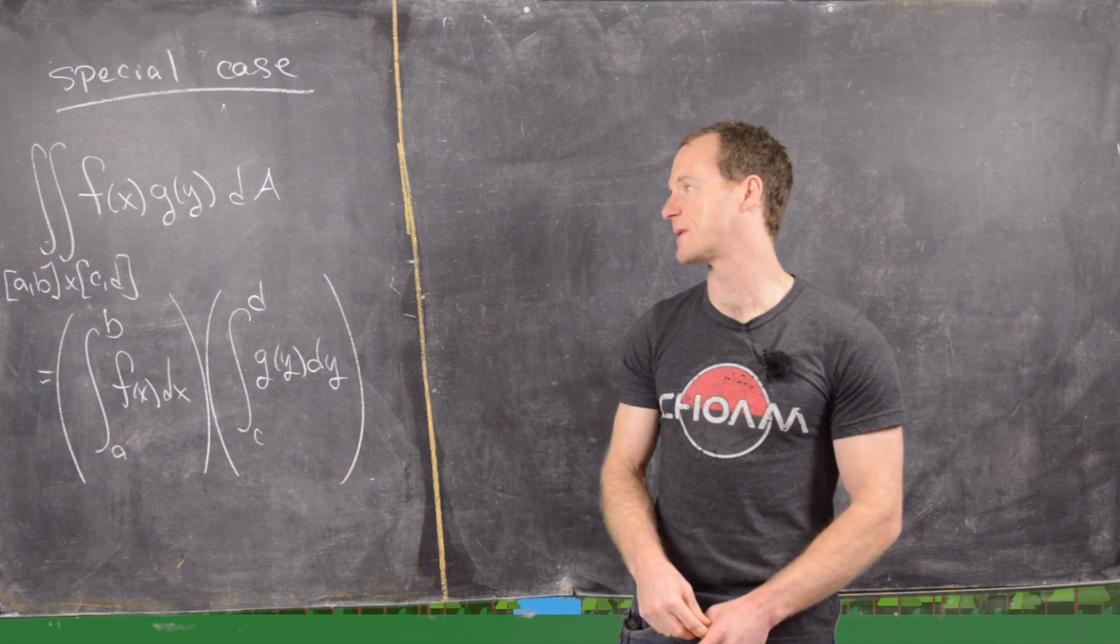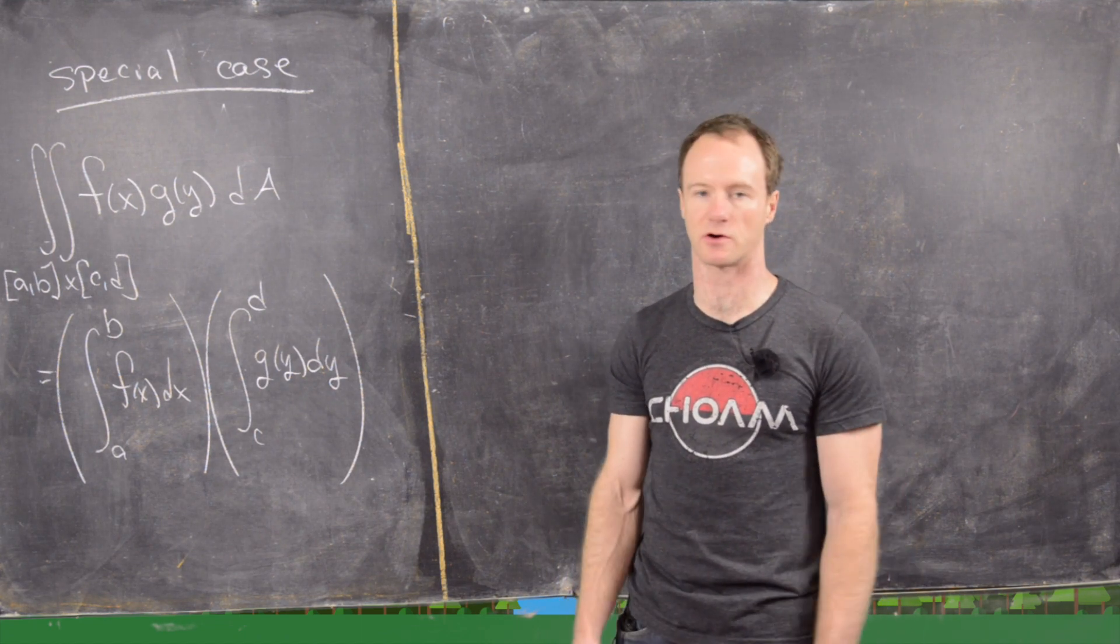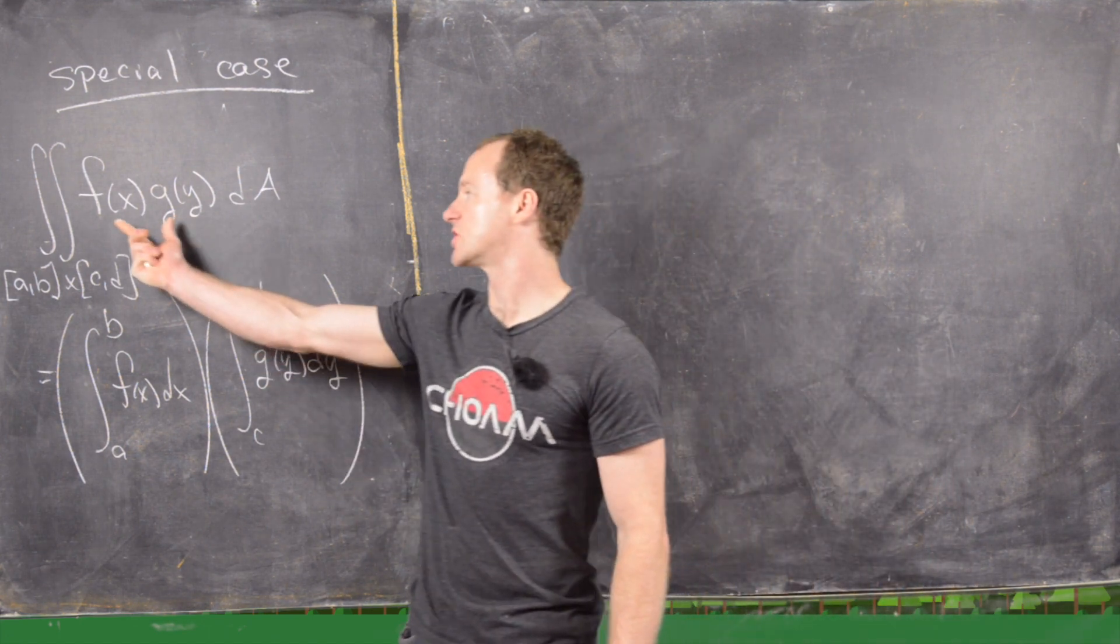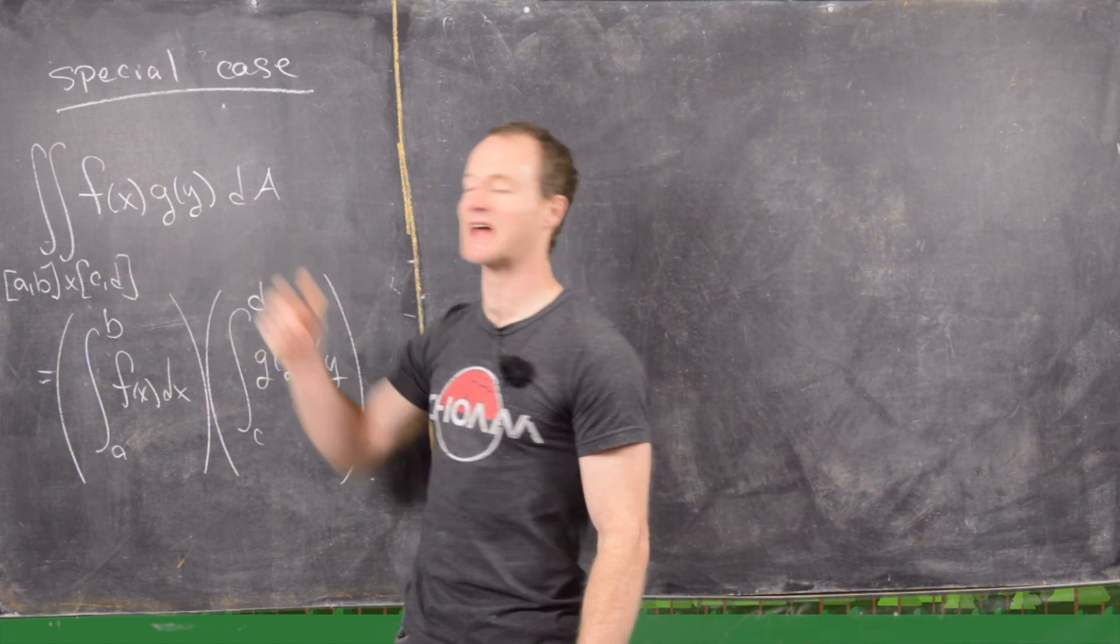Okay, so here we want to look at a very special case of a double integral over a rectangle in the plane, and that is when your integrand turns out to be a function of x times a function of y.